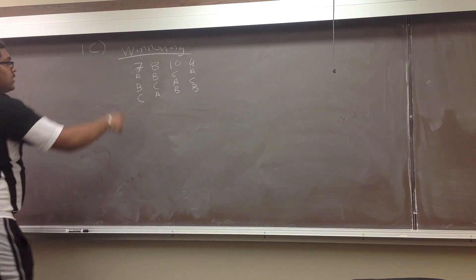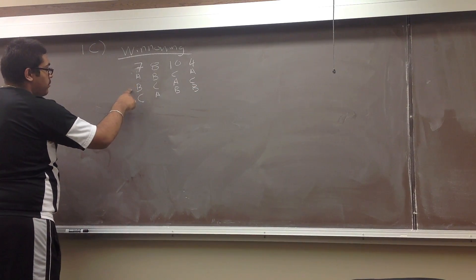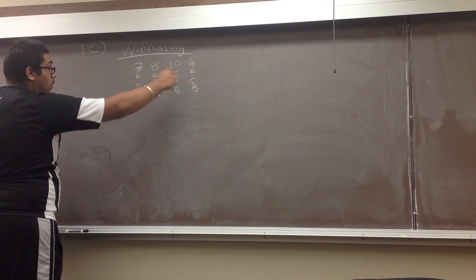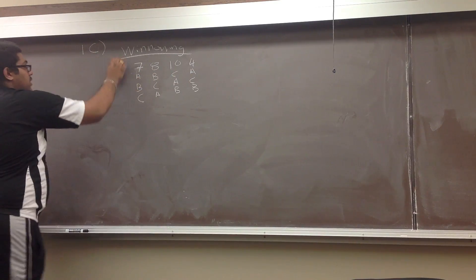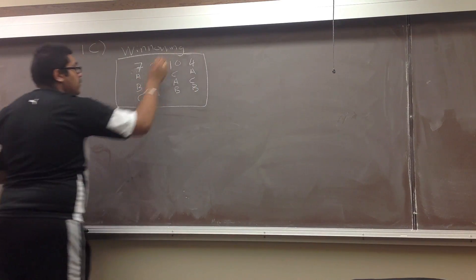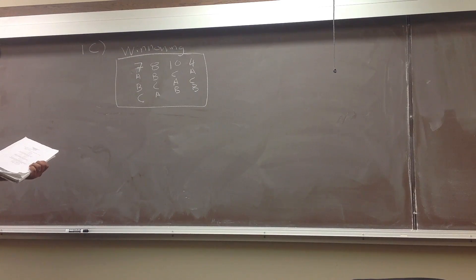So basically it's the same - seven of the voters prefer A over B, B over C, and so forth. Using this chart that they gave us, we have to use the method of winnowing to see who is the winner.